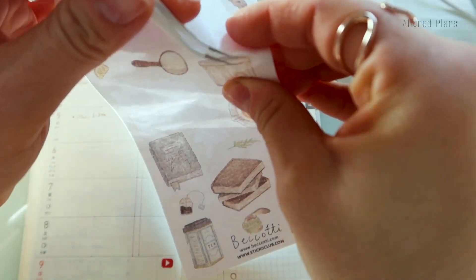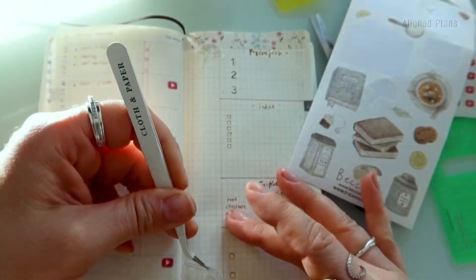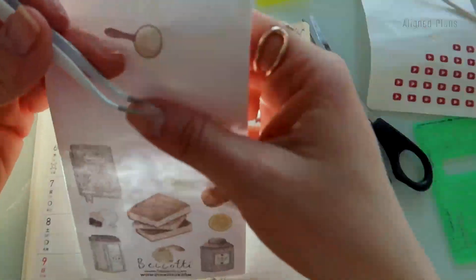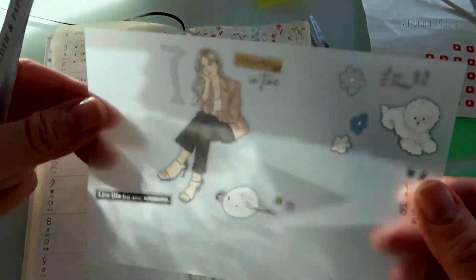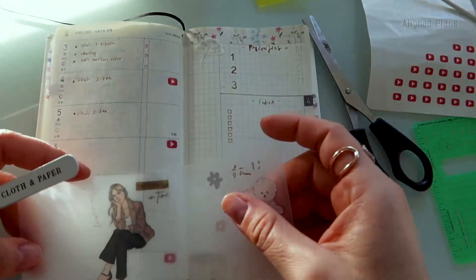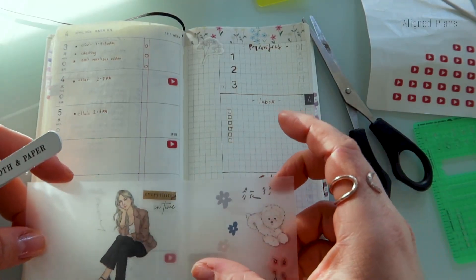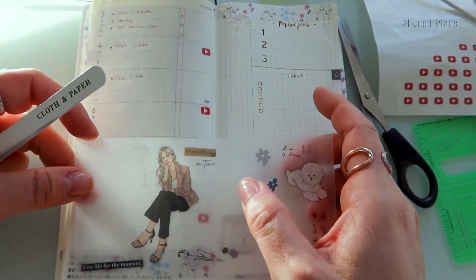Moving on to decor, I have that full sticker sheet. I believe this is actually a Sticky Club sticker sheet. We picked it up from, I believe, Wonder Pens like a little while ago. It's either Wonder Pens or Paper Plus Cloth, I honestly can't remember.